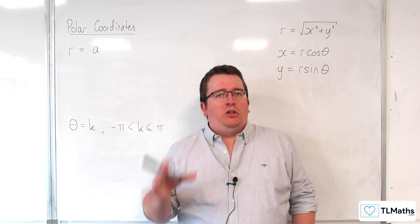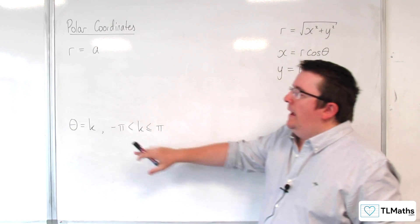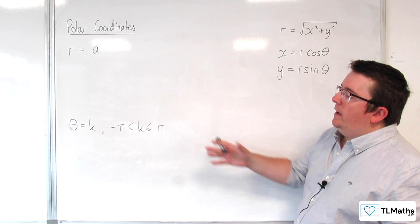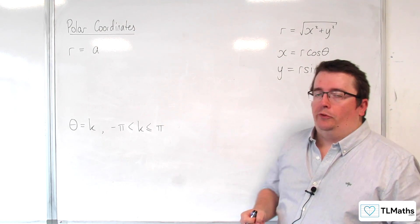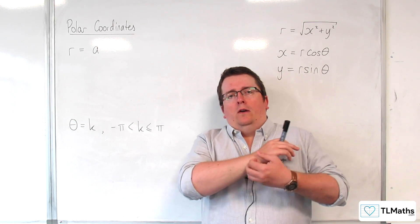In this video we're going to take a look at two specific graphs: r equals a and theta equals k, where k is greater than minus pi but less than or equal to pi.